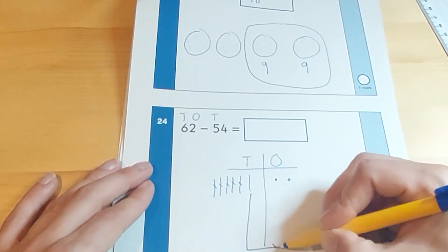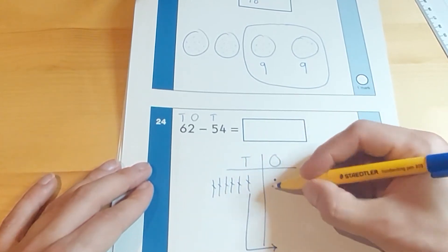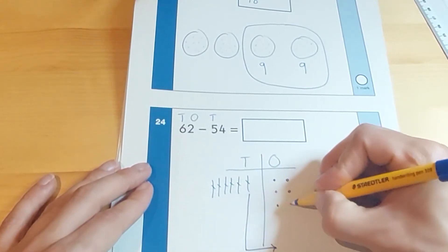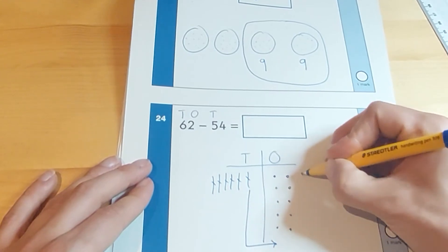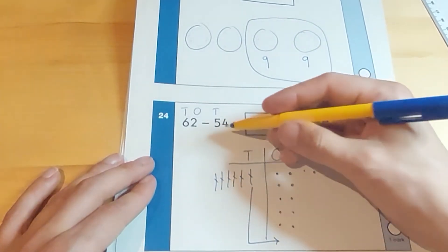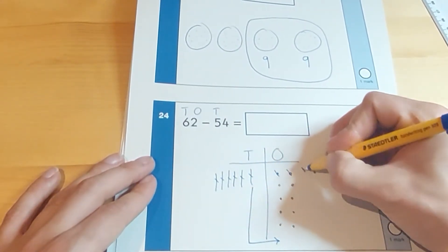We're going to take this 10 over here. Cross it out. One, two, three, four, five, six, seven, eight, nine, 10. Now we can cross out 4 ones. One, two, three, four.